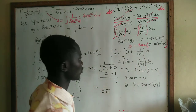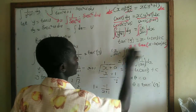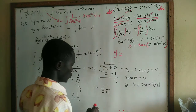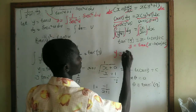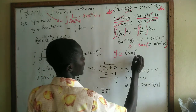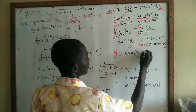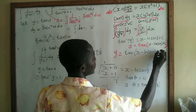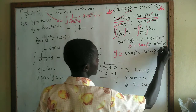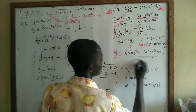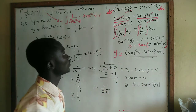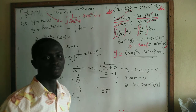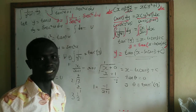So the general solution for the differential equation is y = tan(x − ln|x + 1| + C). Thank you for watching and don't forget to subscribe to my channel. Bye!